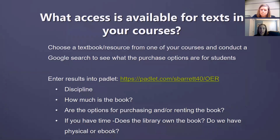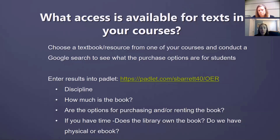Now we're going to do a quick exercise. We'd like to know what type of access is available for texts in your courses. Please go to the Padlet — there's a link in the chat — and choose one textbook, maybe one from a lower-level course, or if you don't use textbooks, any resource you use, and determine how much the book costs. Are there other options for purchasing or renting? And if you have time, check if the library owns the book. We'll give everyone about five minutes and then see what results we get.